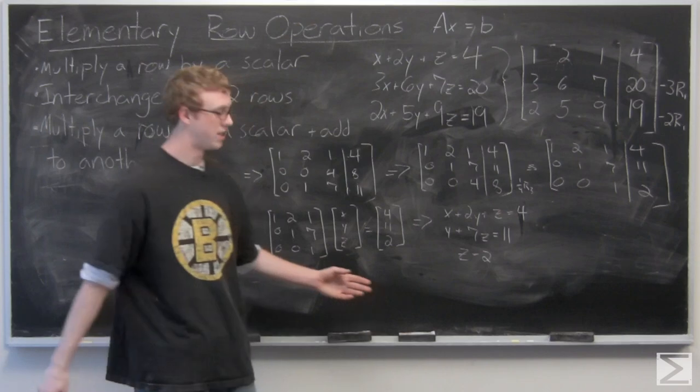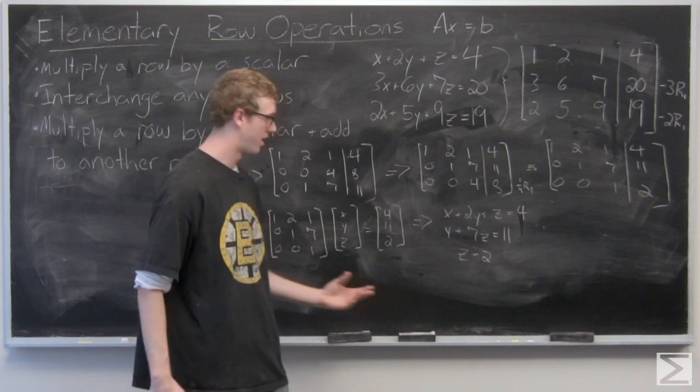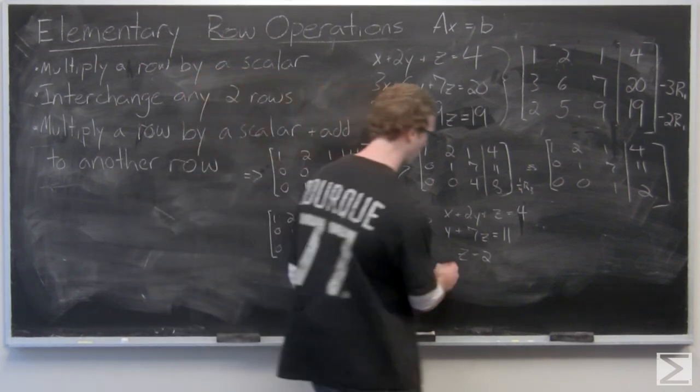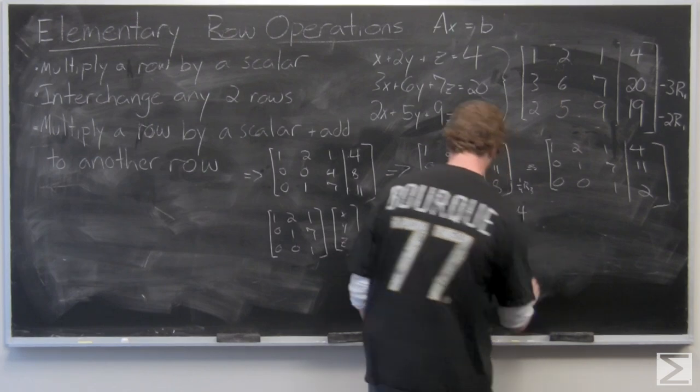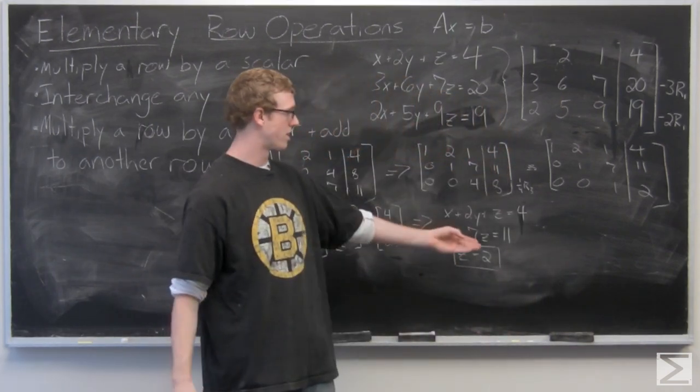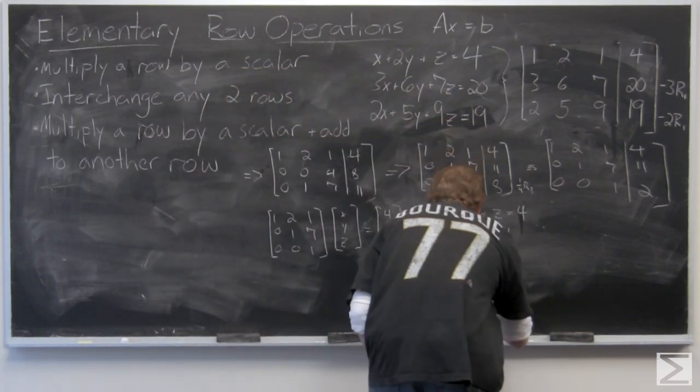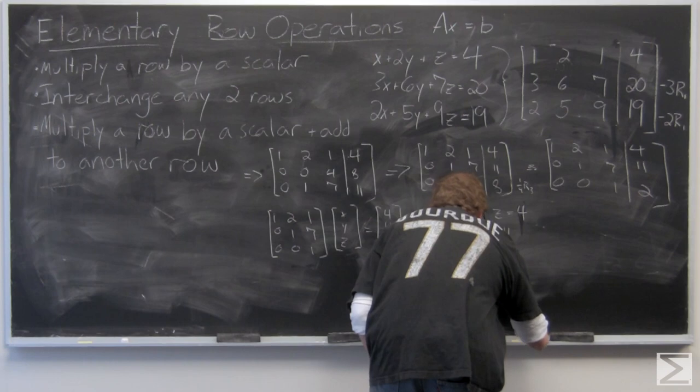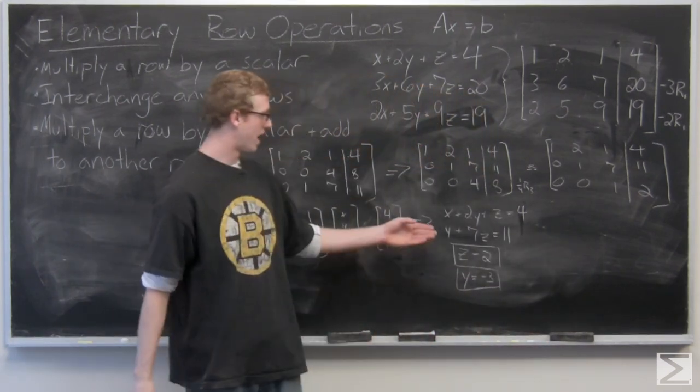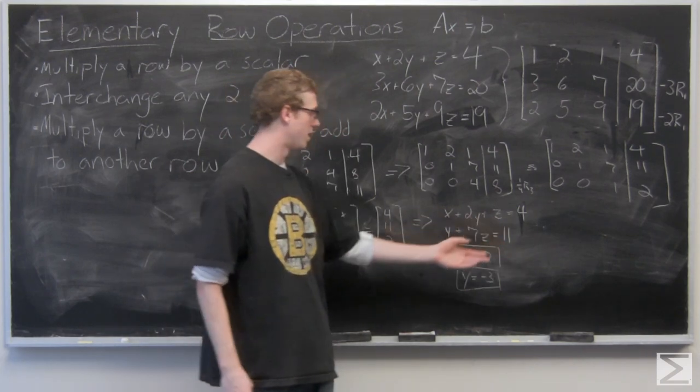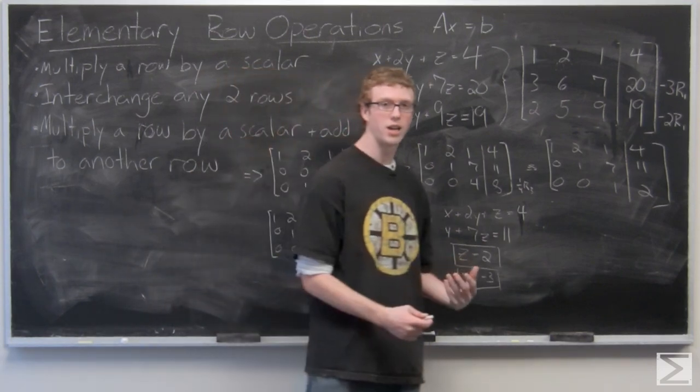We can see after we multiply that the bottom row just results in z equals 2, and then we can solve for y and x. So y plus 14 is going to equal 11. 11 minus 14, y equals negative 3. And then we're going to have x minus 6 plus 2 is going to equal 4. So x minus 4 equals 4, x equals 8.